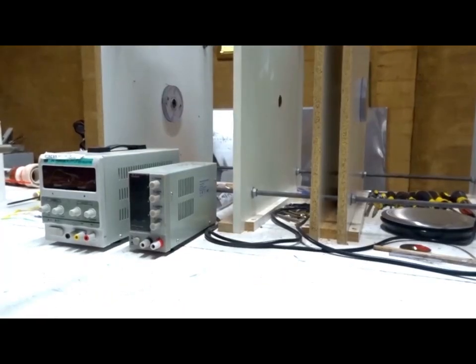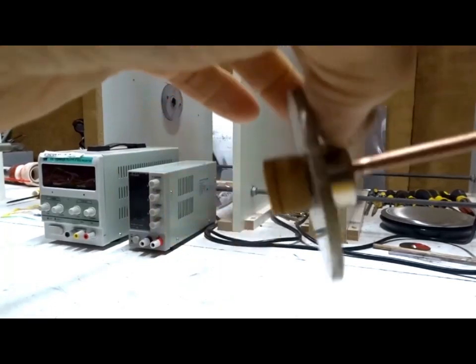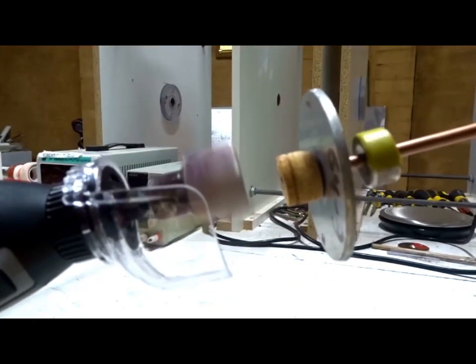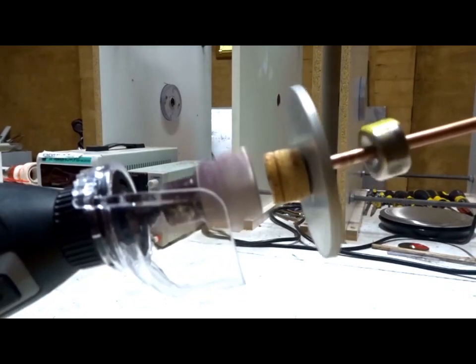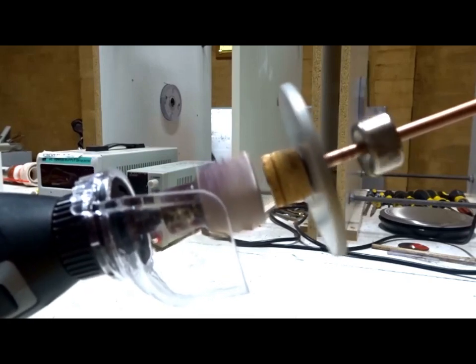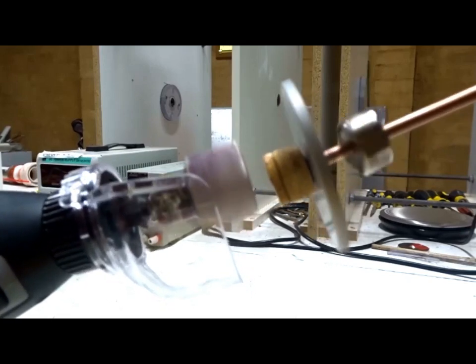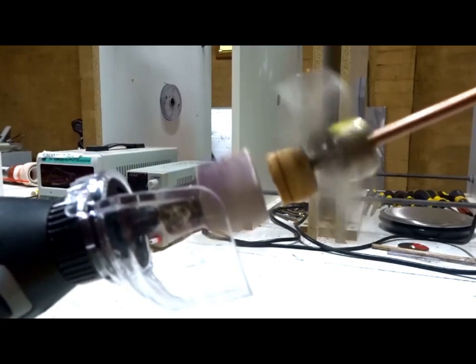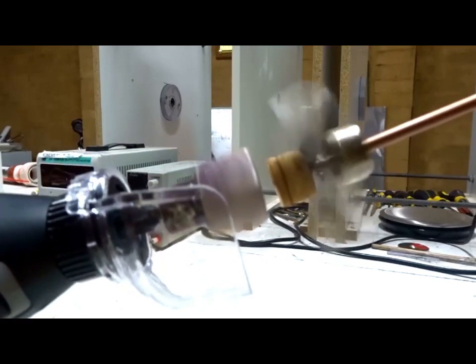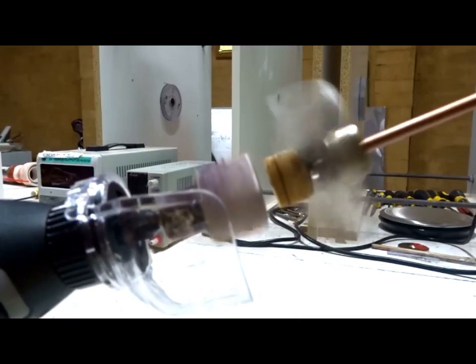Now let's try the aluminum disc and the magnet together. One more time. The magnet spins first and repels the aluminum disc. Then at some point the magnet locks in equilibrium with the disc. There it goes. And we get a much more powerful spin from both of them together than the other one separately.